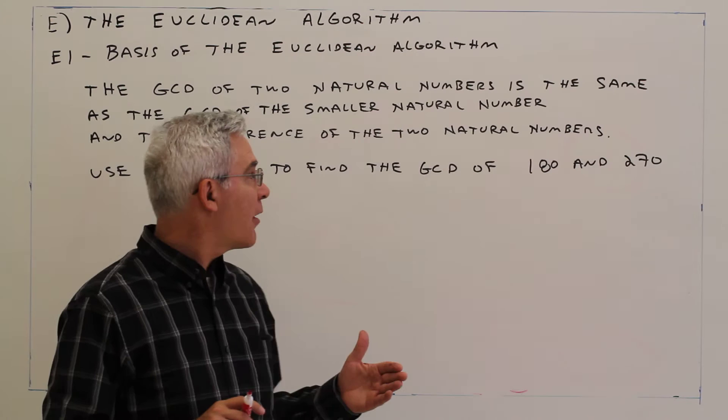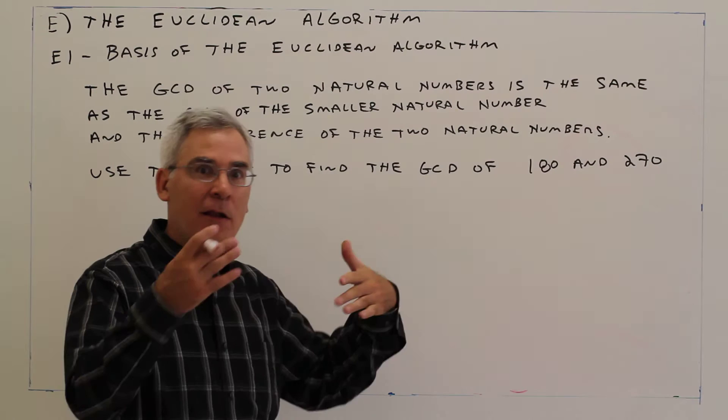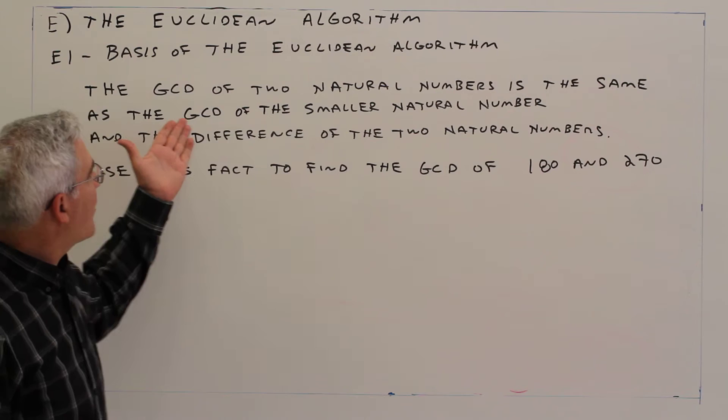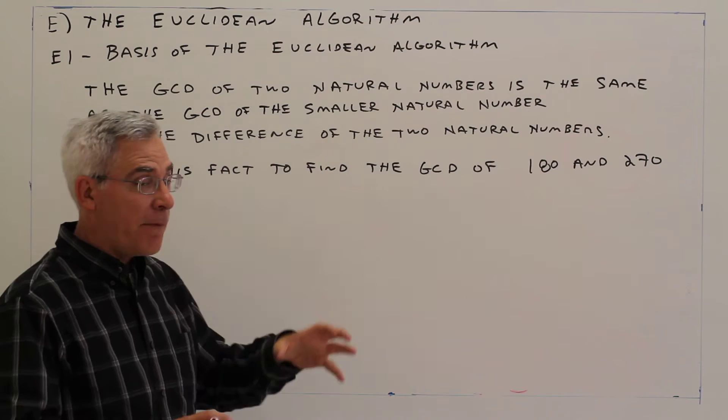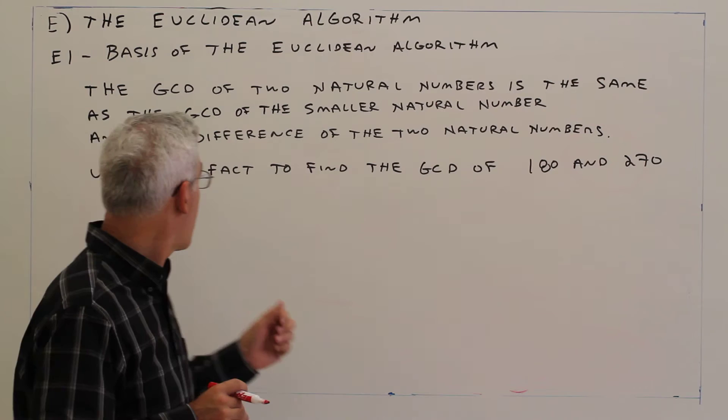Our first video is E1, the basis of the Euclidean Algorithm. This is kind of why the algorithm works. I won't go into too much detail; in the next three videos I'll show you applications. The greatest common divisor of two natural numbers is the same as the greatest common divisor of the smaller natural number and the difference of the two natural numbers.